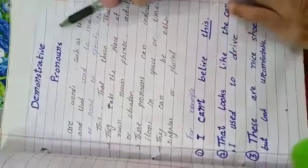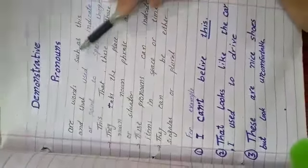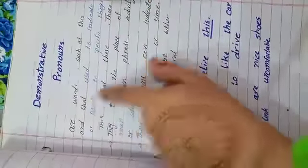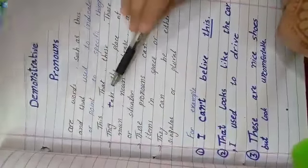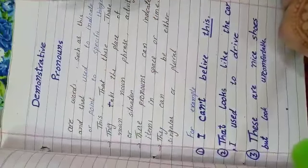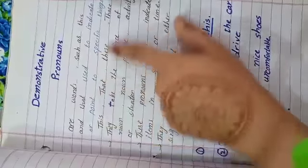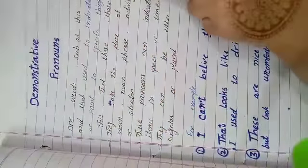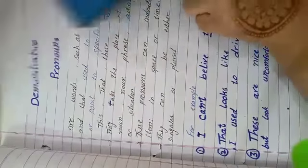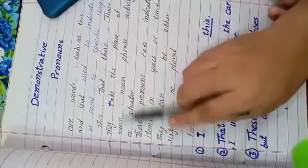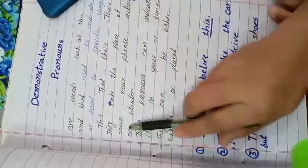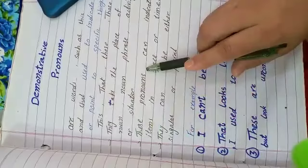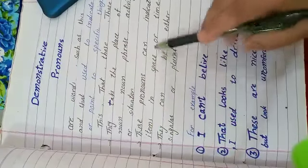Demonstrative pronouns, such as this and that, are used to indicate or point out to specific things. They take the place of a noun, noun phrase, activity, or situation. These pronouns can indicate items in space or time.